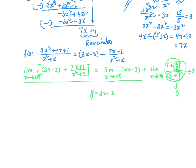In essence, this function is not approaching a horizontal value y is equal to b — it is approaching a slanted or slant line, in this case a straight line with slope 3 and y-intercept negative 3. This is how you find the slant asymptote for a function. I hope this discussion was helpful. Thank you very much.